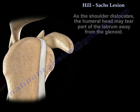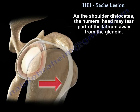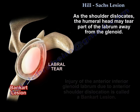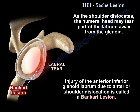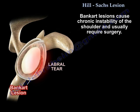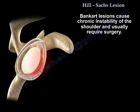During shoulder dislocation, the humeral head may tear part of the labrum away from the glenoid. Injury of the anterior inferior glenoid labrum due to anterior shoulder dislocation is called a Bankart lesion. A Bankart lesion can cause chronic instability of the shoulder and usually requires surgery.